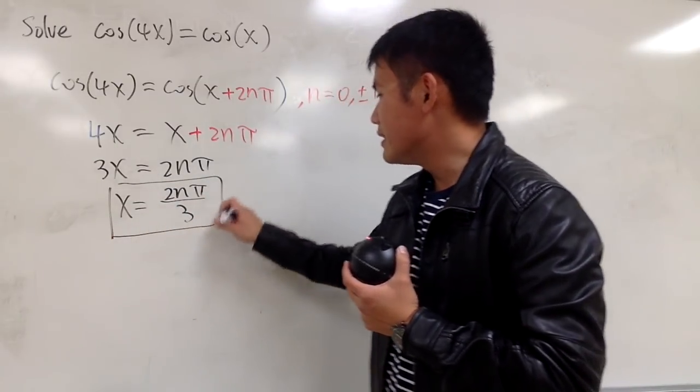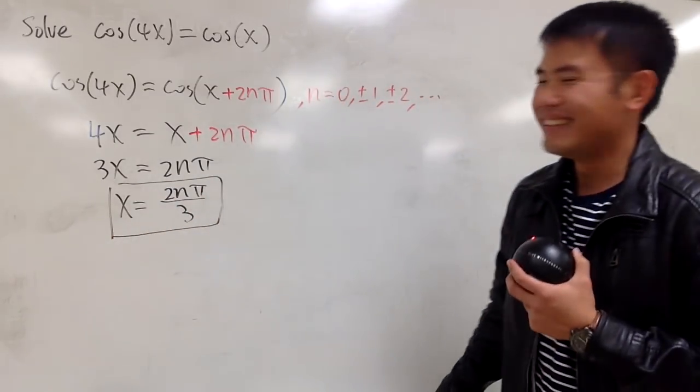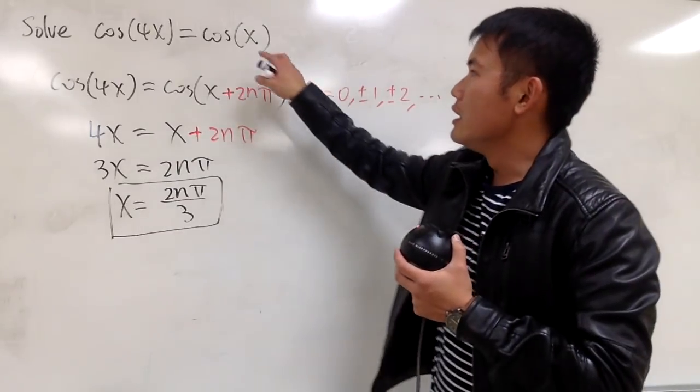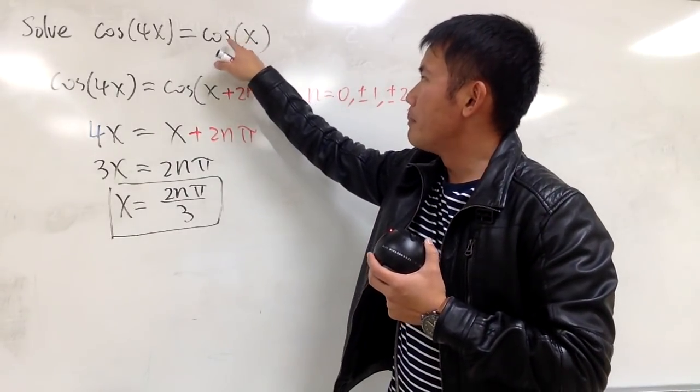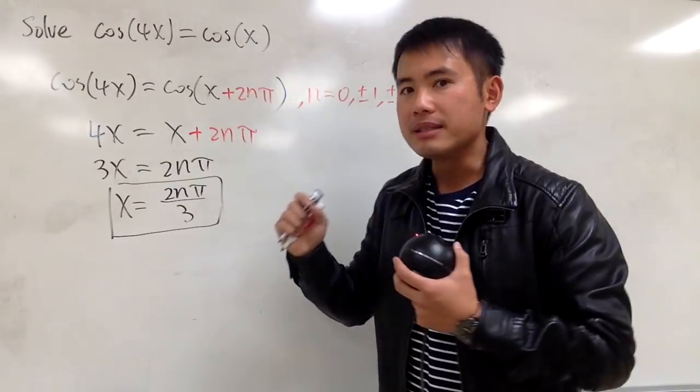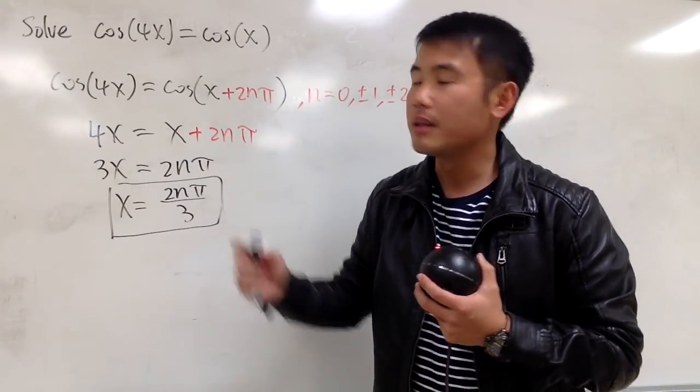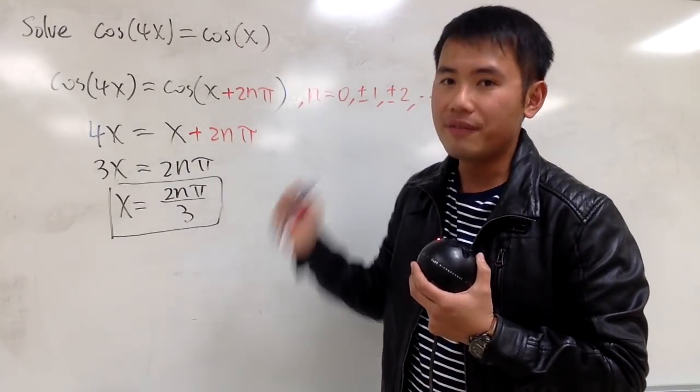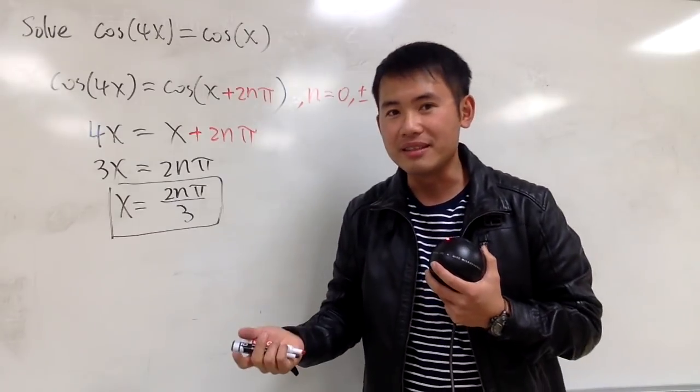And this is not it. Why? Because if you look at this part, positive x inside is the same as negative x inside of cosine, because cosine is an even function. So we have to consider the other situation as well.